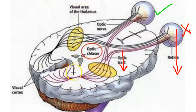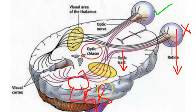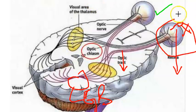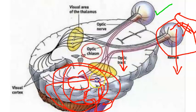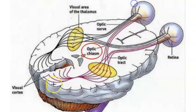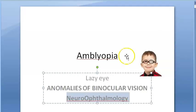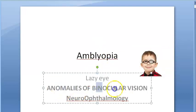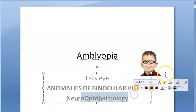The lateral geniculate body in our brain will not develop fully for the suppressed eye. So tomorrow, even if that eye is given the correction it needed — say spectacles for its refractive error — the person still cannot see, because that part of the brain has not developed correctly. This is the lazy eye syndrome, an anomaly of binocular vision in neuro-ophthalmology.